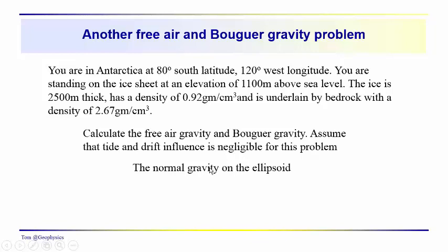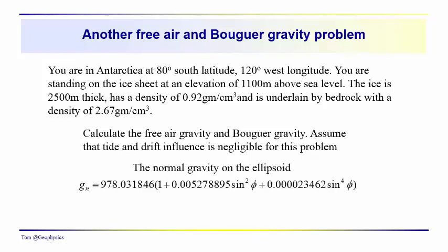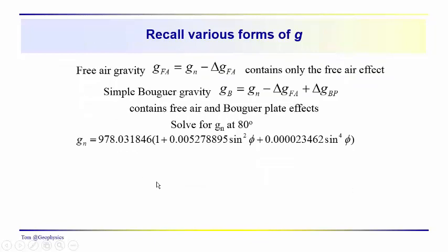We're going to calculate the normal gravity on the ellipsoid using the normal gravity formula. These accelerations are in gals — 978.031846 gals at the equator. The free air gravity — which is the theoretical or predicted gravity including only the free air effect — would be the normal gravity minus the free air term. The simple Bouguer gravity is the normal gravity minus the free air term plus the plate term. Solving first for normal gravity at 80 degrees, we get 983.0607 gals.